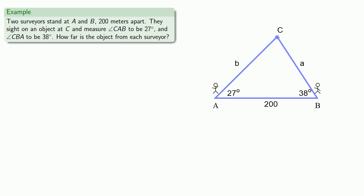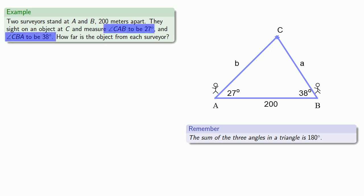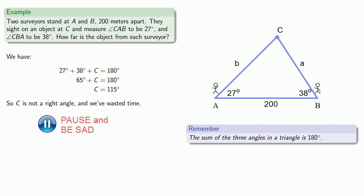So here the thing to remember is that the sum of the three angles in a triangle is 180 degrees. And so you know two angles, 27 and 38. Whatever that third angle is, the three will add to 180 degrees, and so that gives us an equation, and we can solve that equation. And we notice that C is not a right triangle, and so we've wasted time. Or have we?